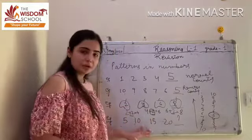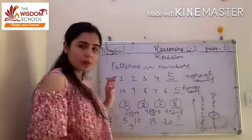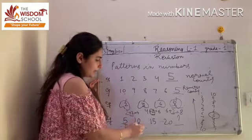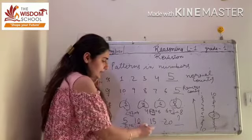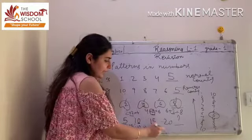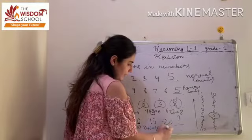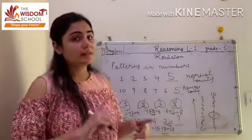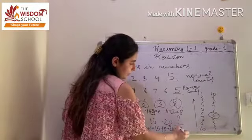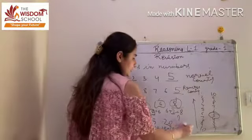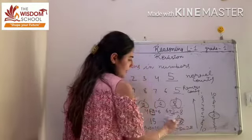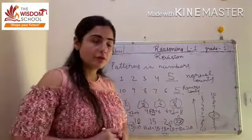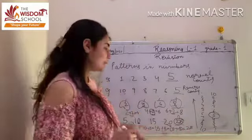Here we will use skip count of 5. Why? Because we will add 5 to get the next number. So: 10, add 5 gives 15, add 5 gives 20, add 5 gives 25. We add 5 to each number to get the next number.